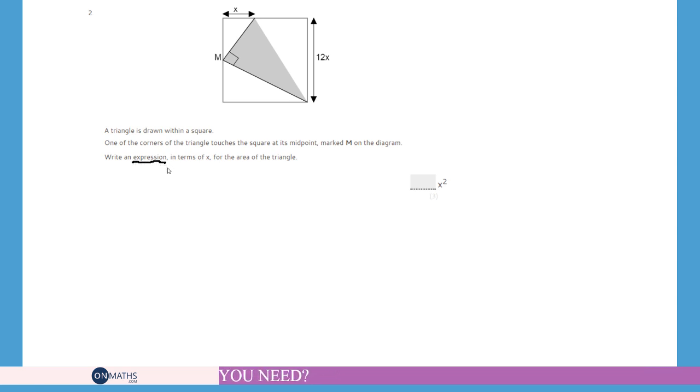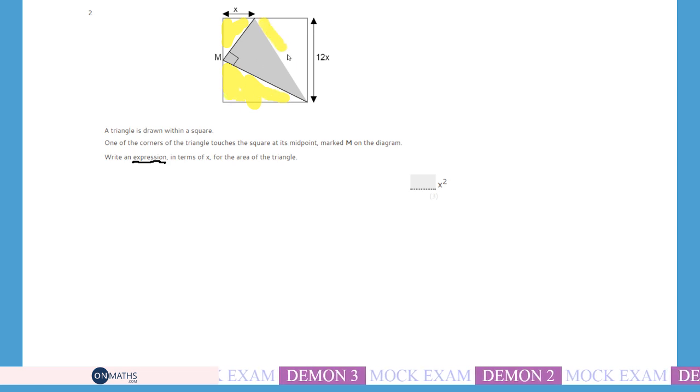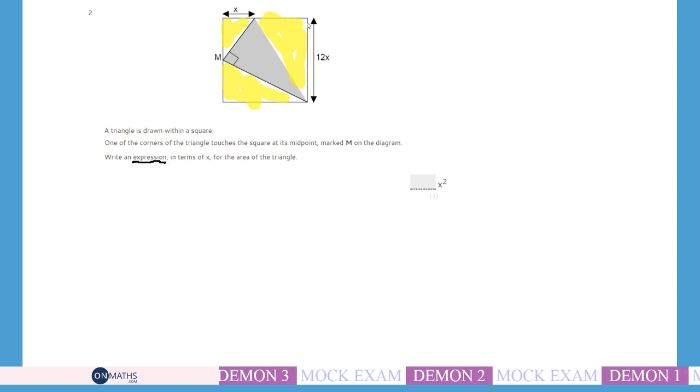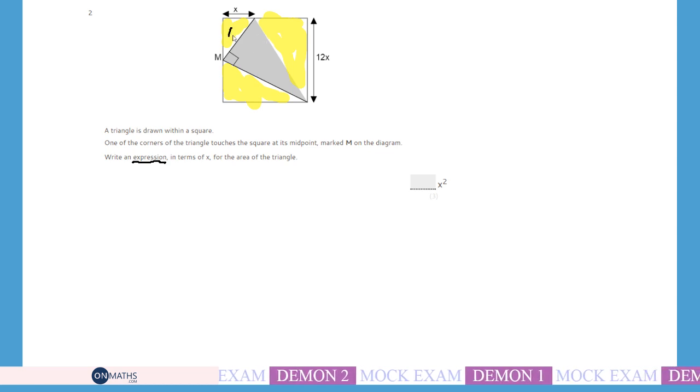There's a bit of a hint there that it's just we're looking for a coefficient of x squared for our answer. The same as before, we are looking to work out a big area and take away the bits of the big area that we don't want. You can't necessarily work out what this triangle is directly. So again, I'm going to be looking at working out the areas of the shaded parts first, taking those away from the area of the square and it will leave the area of the triangle. And I think that's the easiest way of doing this question.